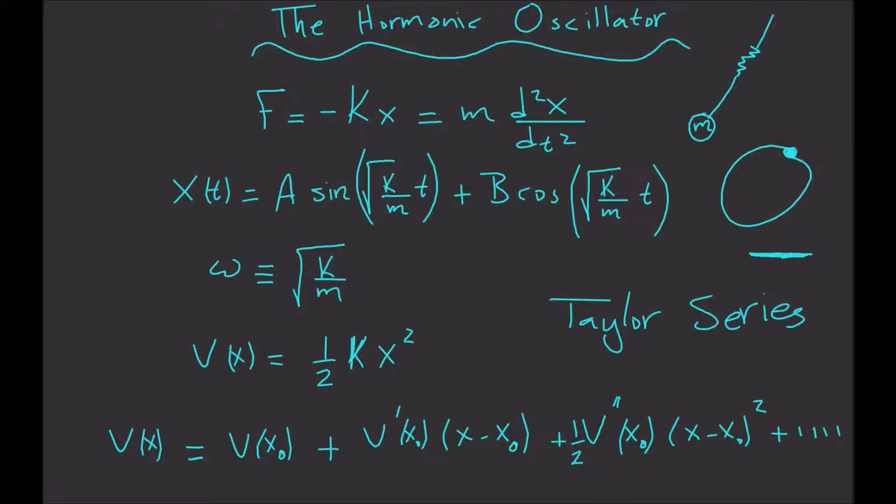If we look at this Taylor series expansion, the first part is constant so it doesn't really affect our force. The second part is the first derivative, which is zero at a minimum. If you look at our potential function as a parabola, at this point, the minimum, the first derivative is zero. So what really matters is the third term.